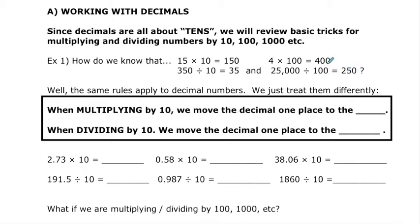We can apply the same rules to decimal numbers — we just treat them differently. With our whole numbers, there's an imaginary decimal point right beside them. So when we're multiplying by 10, that decimal point gets moved one spot to the right. When multiplying by 100, we move it two places to the right; by 1000, three places to the right. However many zeros are in that base of 10 is how many places we move the decimal to the right.